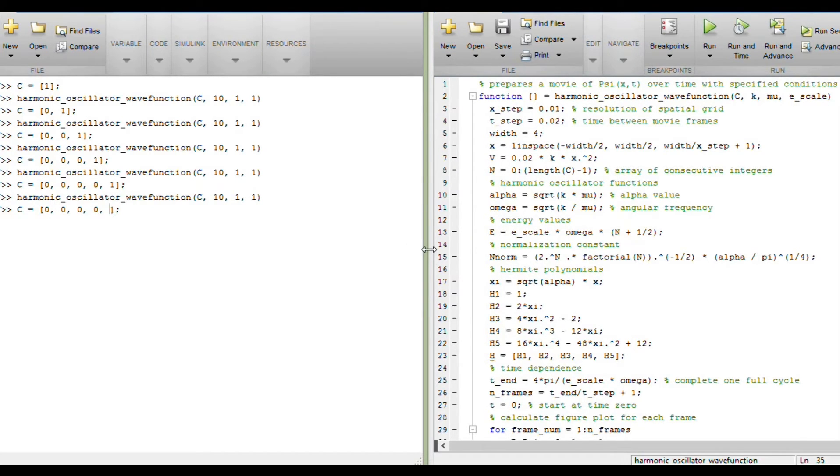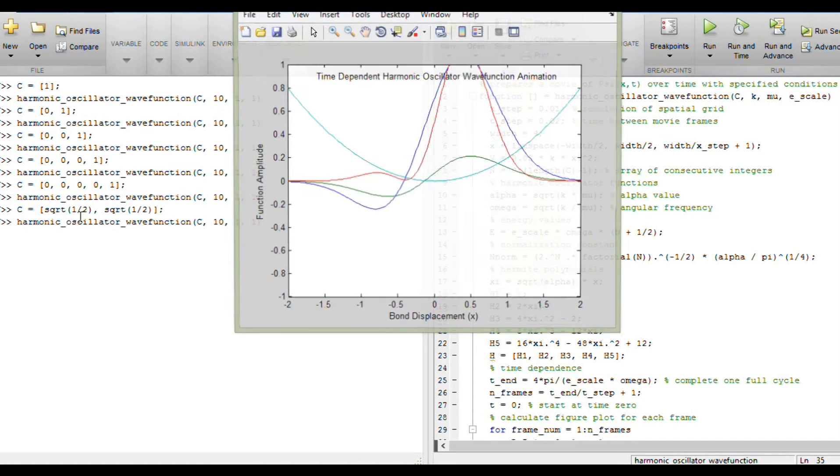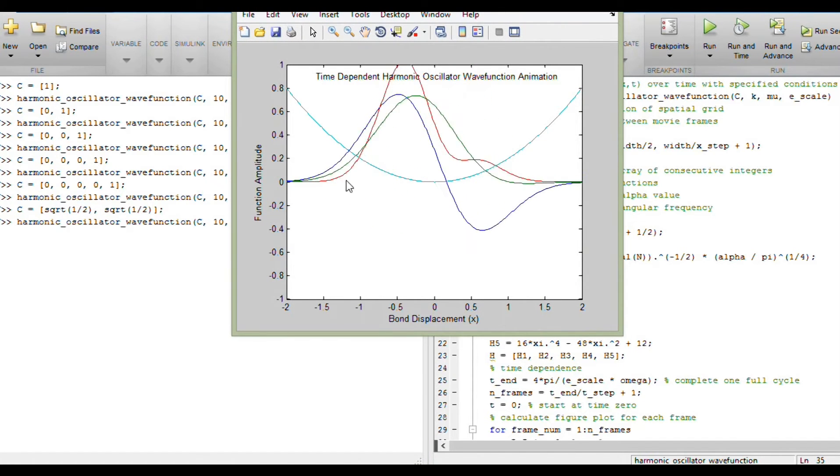If we do the same type of thing we did with particle in a box for those time-dependent wave functions, let's give it n equals 0 and n equals 1 coefficients of square root of 1 half. So the particle is half in psi 1, half in psi 2. And now we do see this density oscillate over time. This linear combination has given us a particle which moves back and forth from the left and then to the right.